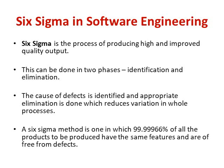Six Sigma is a term generally used to indicate a well-controlled process, within the process limits from the center line in the control chart — between the control chart requirements or tolerance limits and the center line. Six Sigma is the process of producing high and improved quality output. This is done in two phases: identification and elimination. The cause of defects is identified and appropriate elimination is done, which reduces variation across the whole process.